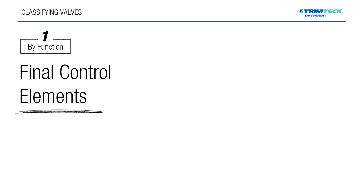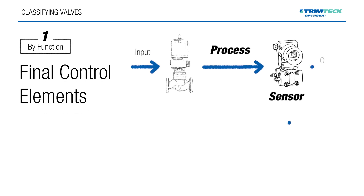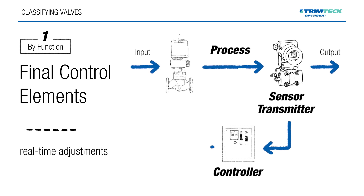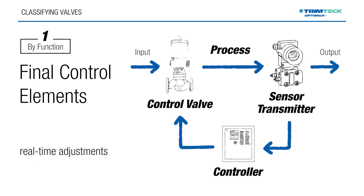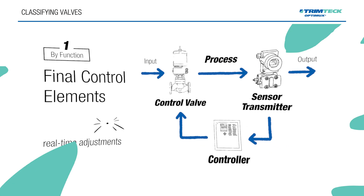Final control elements play a critical role in process automation. The most common type is the control valve, which receives signals from a controller and makes real-time adjustments to the process.